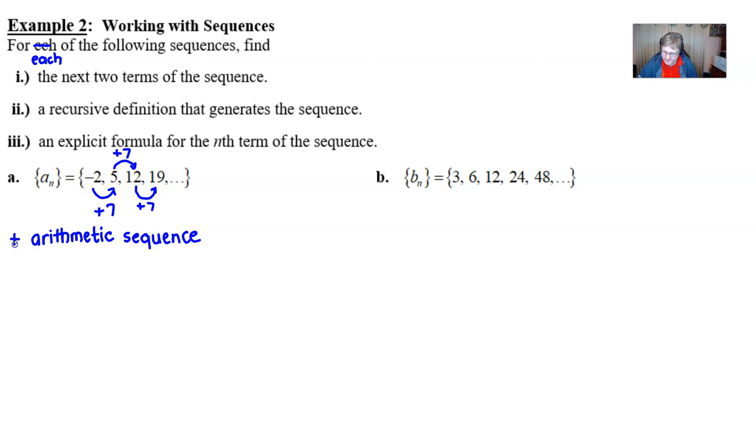The next two terms of that sequence. Well, what I would say to do is you could just simply say that would be the fifth term and the sixth term. A5 would just simply be what we get when we add seven to our nineteen, which of course is going to be twenty-six. And then if we add seven more to twenty-six, we're going to get thirty-three. So that will answer letter I.